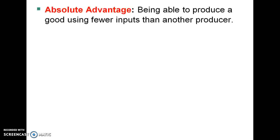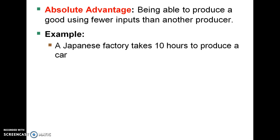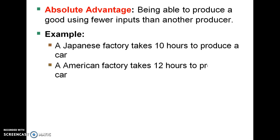We're going to introduce the first trade concept, which is referred to as absolute advantage. Absolute advantage is a pretty intuitive concept. It means you're able to produce a good using fewer inputs than another producer. For example, a Japanese car factory takes 10 hours to make a car, while an American car factory takes 12 hours. So if time is an input to make cars, the Japanese factory uses less time and therefore has an absolute advantage in producing cars.